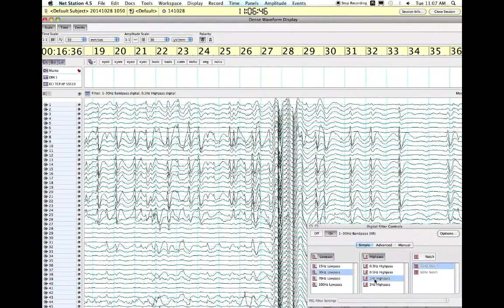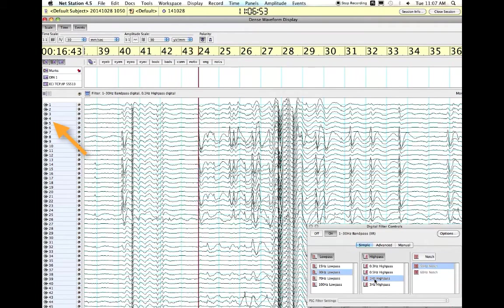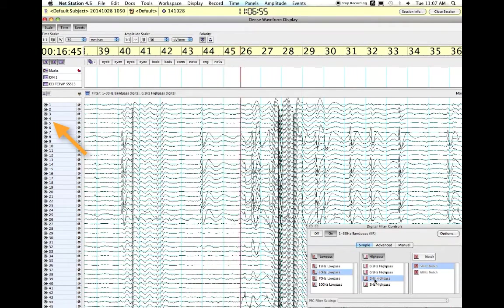This is what the EEG data looks like as it's being recorded on the data acquisition computer. The numbers down the left side correspond to the electrodes on the EEG cap which the participant is wearing.